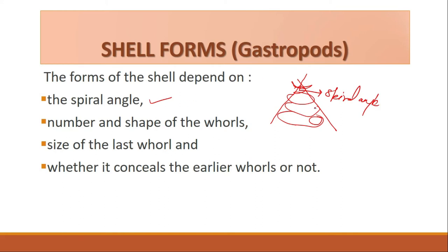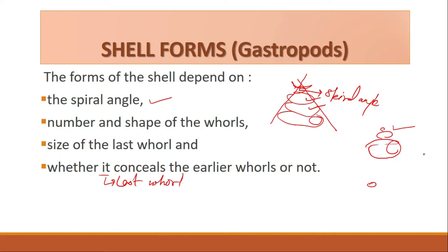Other factors include the number and shape of the whorls — how many whorls are there and what is their shape — and the size of the last whorl, which is your body whorl where the animal resides. The fourth important factor is whether the last whorl conceals the earlier whorls or not. Sometimes the last whorl is so large that it conceals all the spire whorls. These are the four important factors upon which shell form depends.